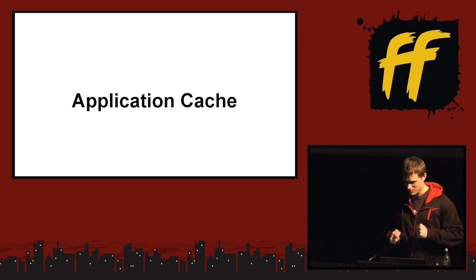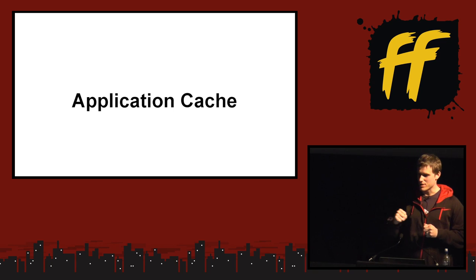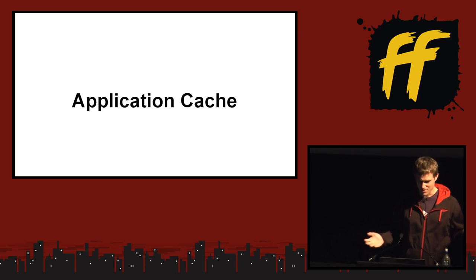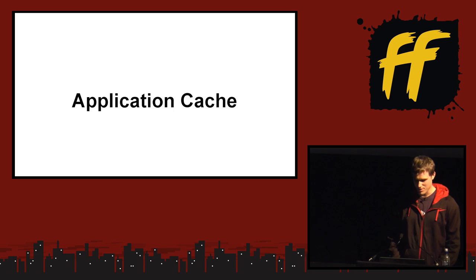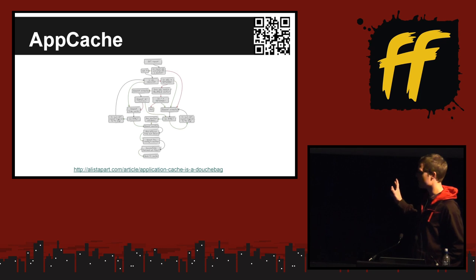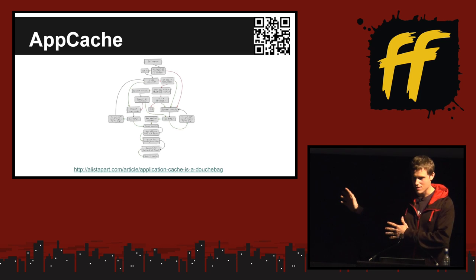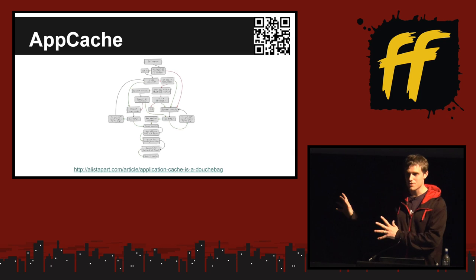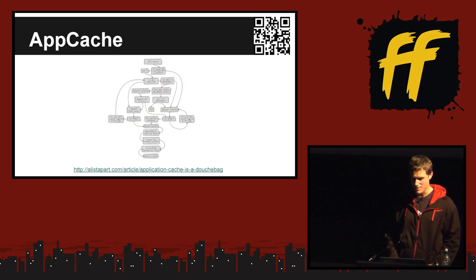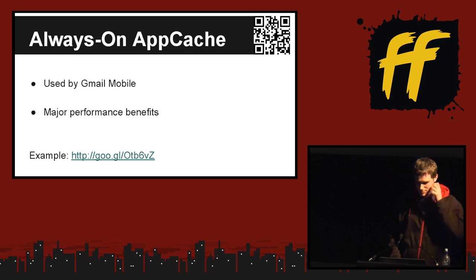Now for a fun topic that everyone loves: the application cache. I had the privilege of working with this in its infancy. The good news is a lot of the bugs are fixed now. The bad news is the laundry list of caveats that come along with the intended way it works. If you want to use it, go read the definitive article. I included here the flowchart of logic for a network request for a page that uses app cache — it's not as bad as it looks.